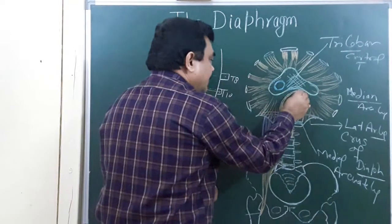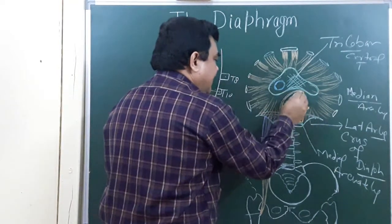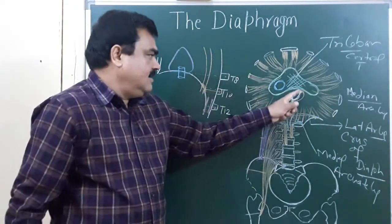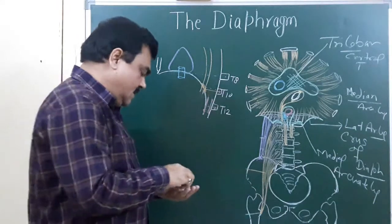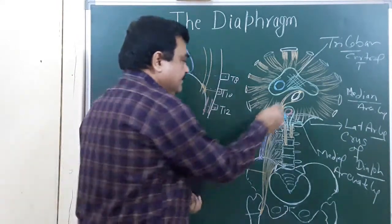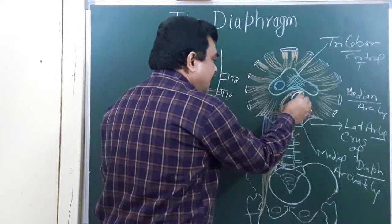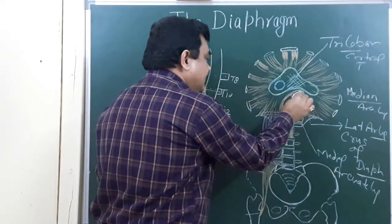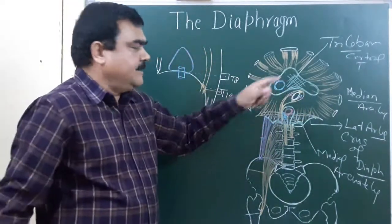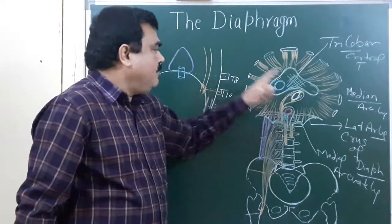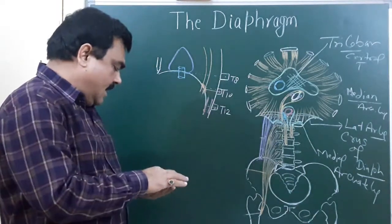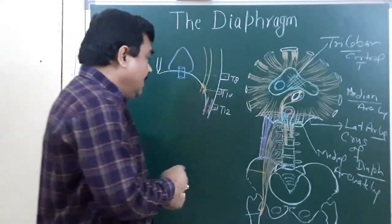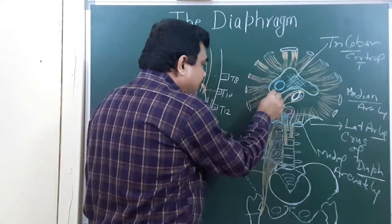Through the esophageal opening — this is the esophageal opening — the anterior and posterior vagal trunks pass through this. Also, branches of the left gastric artery and tributaries of the left gastric vein also pass through this esophageal opening.